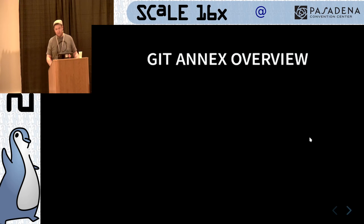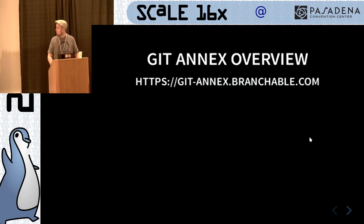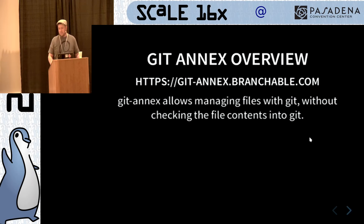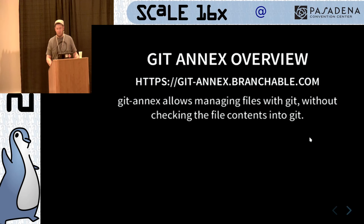Git Annex is an add-on to Git itself and you can find it at git-annex.branchable.com. It allows you to manage files with Git without checking them into Git, which sounds a little paradoxical, but we'll get into that.